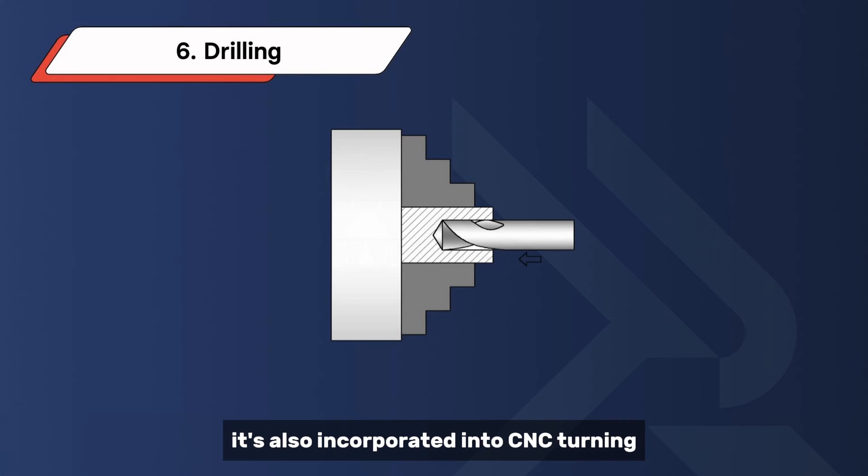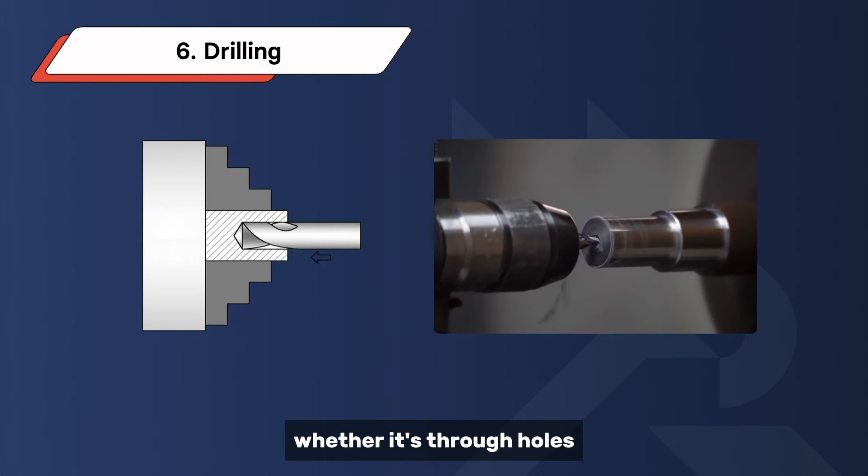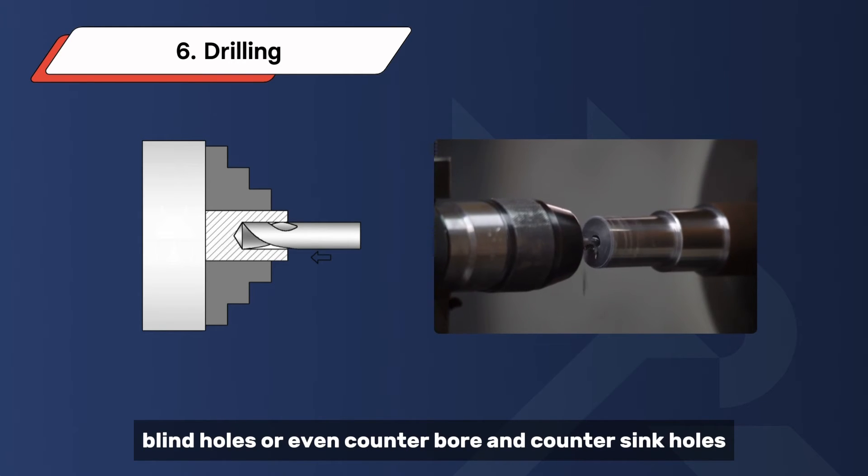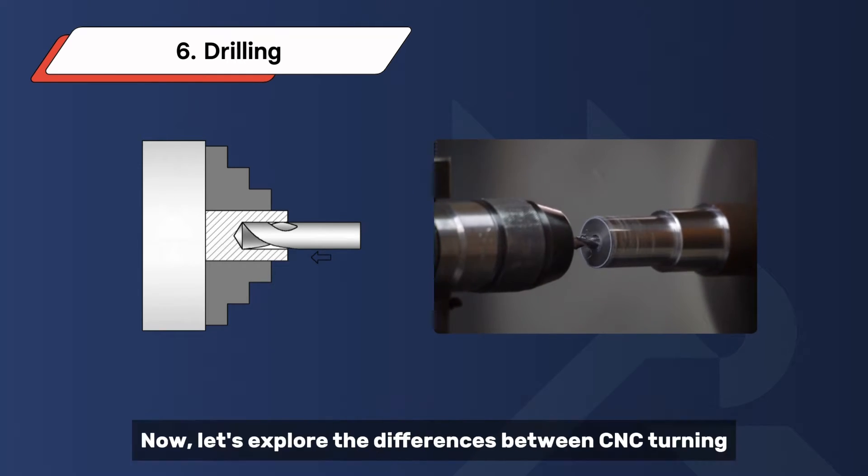Drilling: Even though drilling might seem more associated with milling, it's also incorporated into CNC turning. Drilling involves making holes in the workpiece, whether it's through holes, blind holes, or even counterbore and countersink holes. It's essential for creating openings and passages in cylindrical parts.